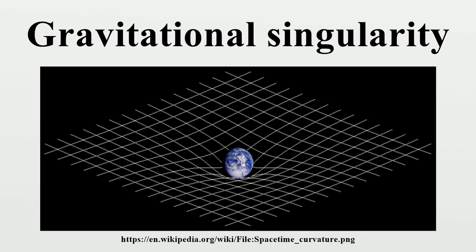Any star collapsing beyond a certain point would form a black hole, inside which a singularity would be formed, as all the matter would flow into a certain point. This is again according to general relativity without quantum mechanics, which forbids wave-like particles entering a space smaller than their wavelength. These hypothetical singularities are also known as curvature singularities.